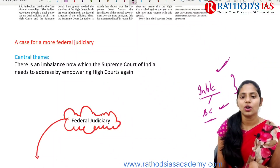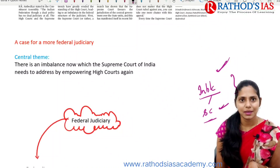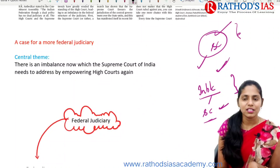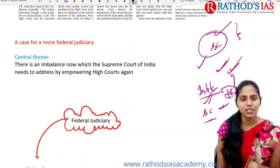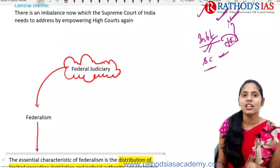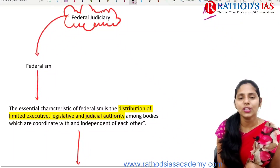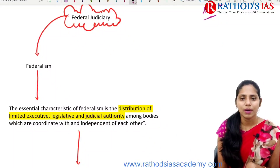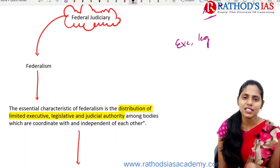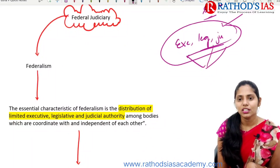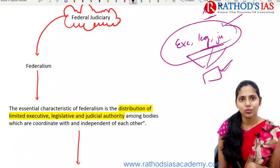This article says that recently, because of some steps taken by the Supreme Court, it is making the Supreme Court more powerful. To address this imbalance between the High Court and the Supreme Court, the Supreme Court needs to take steps—especially that of empowering High Courts. Federalism is one of the important features of our constitution. It mainly talks about limited executive, limited legislature, and judicial authority. These three bodies need to coordinate with each other and be independent of each other.